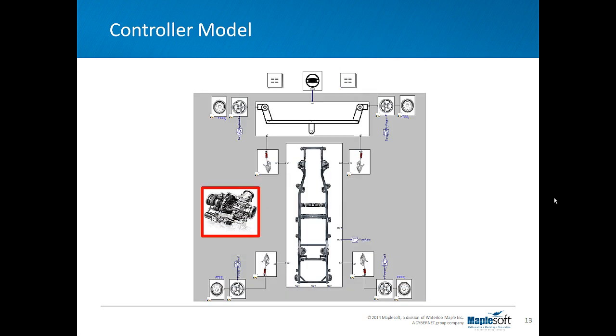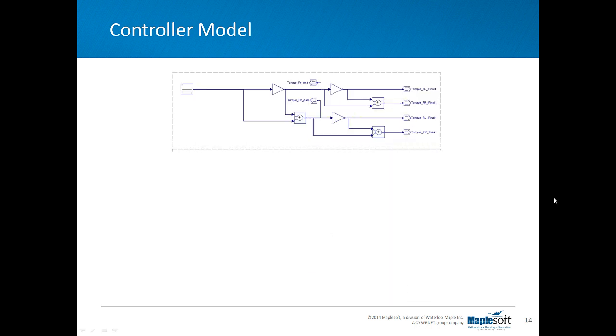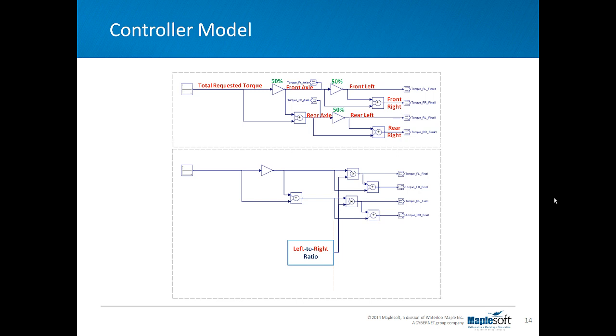In torque distribution subsystems, for reference vehicle which produces the reference signals for our controller, we set the total requested torque to be divided equally between all four wheels. For the actual vehicle which is enhanced with torque vectoring controller, and the purpose of controller is to adjust for any error between reference vehicle and the actual vehicle.